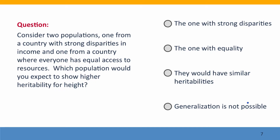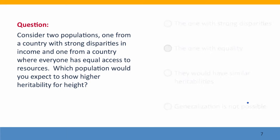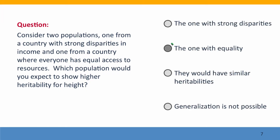Here's a quiz question addressing what we just covered. In two populations — one from a country with strong disparities in income and one from a very fair country — which population would you expect to show higher heritability for height? The answer is we'll see higher heritability in the population where everyone has equal access to resources, because very little of the variation will be due to environmental variation.